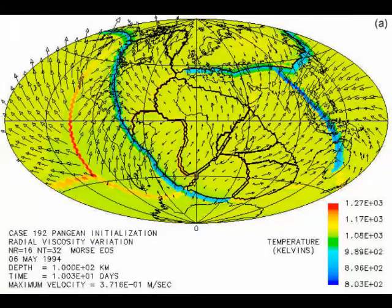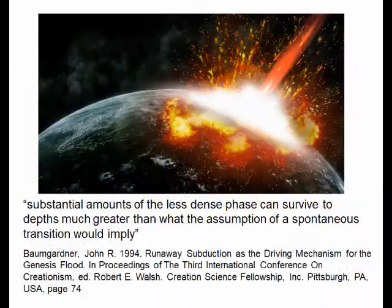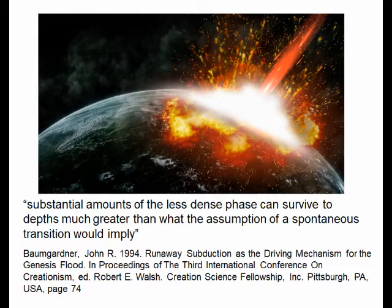Perhaps God made the earth with long subduction zones and pre-sunk oceanic crust. So then he guesses it would take the blow from a modest sized meteorite impact to shake the blob and initiate nucleation of seed crystals, converting the metastable material to the denser phase needed to sink quickly, even though substantial amounts of the less dense phase can survive to depths much greater than what the assumption of a spontaneous transition would imply.